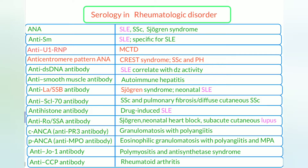Anti-RNP (ribonucleoprotein) antibody is for mixed connective tissue disease. Anticentromere antibody, a type of anti-nuclear antibody, is for CREST syndrome: calcinosis, Raynaud's phenomenon, esophageal dysmotility, sclerodactyly, telangiectasia — systemic sclerosis with pulmonary hypertension.